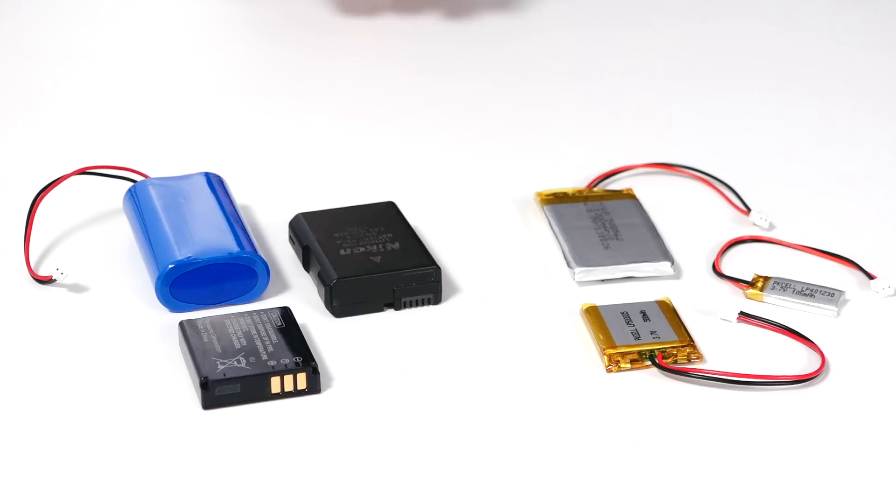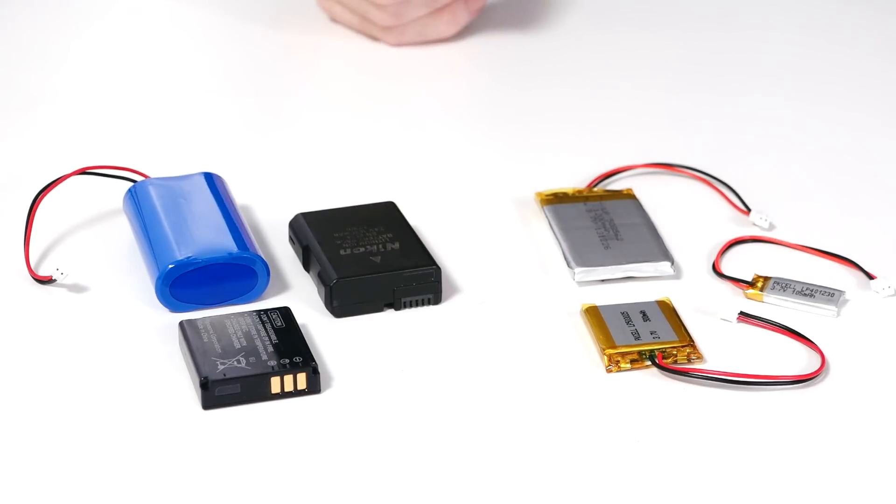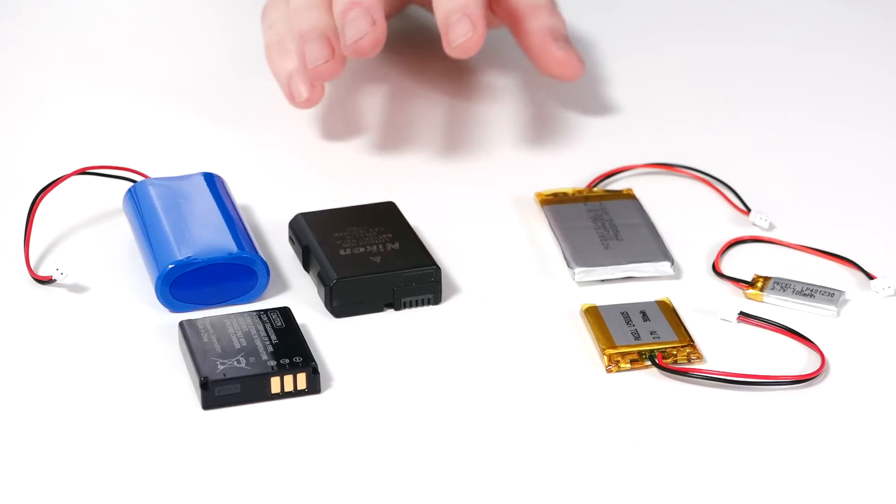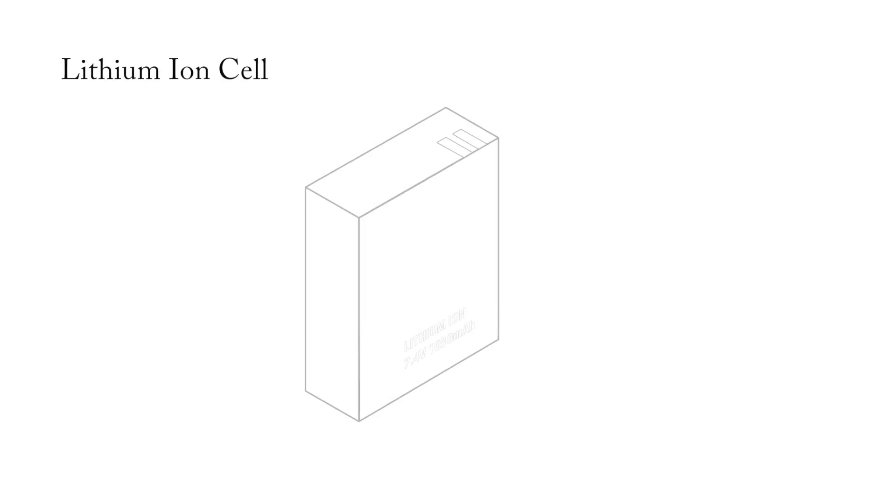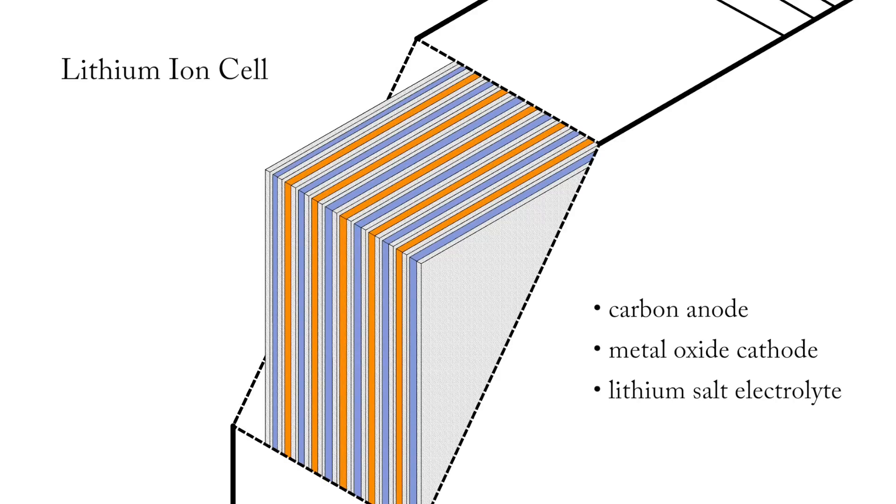The major difference between lithium ion and lithium polymer is in the electrolyte. The microporous electrolyte used in lithium polymer batteries means they can deliver the same power as lithium ions, but in a lighter, flexible package. Otherwise, the chemistries are the same. Inside of a lithium ion cell, you'll find layers of anode, usually composed of carbon, cathode of metal oxide, and an electrolyte containing a lithium salt.